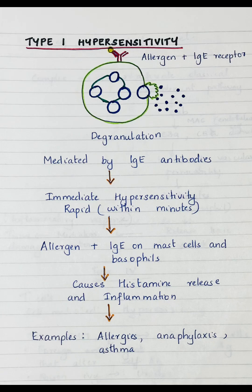Type 1 hypersensitivity reaction. This is also called immediate hypersensitivity reaction, because the reaction occurs rapidly within minutes after exposure to the allergen. The reaction is mediated by IgE antibodies. The allergen binds to IgE on mast cells and basophils, causing degranulation — that is, the release of chemicals like histamine and inflammation. Examples of Type 1 hypersensitivity reaction include allergies, anaphylaxis, and asthma.